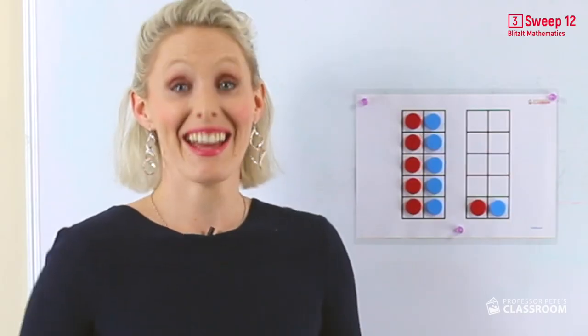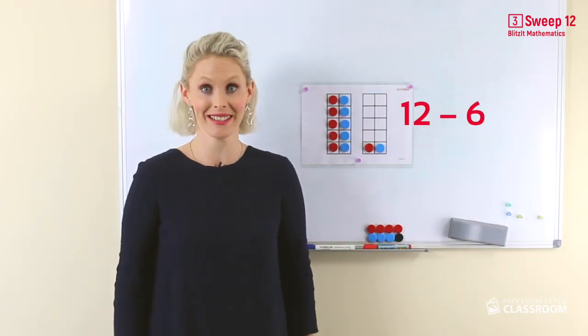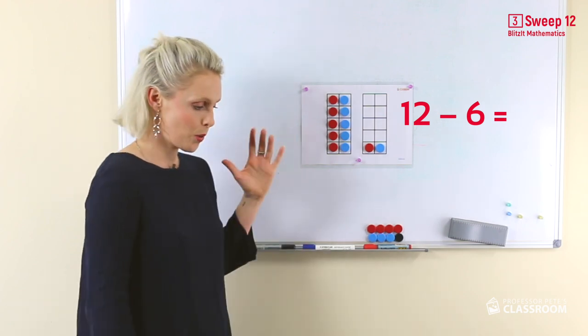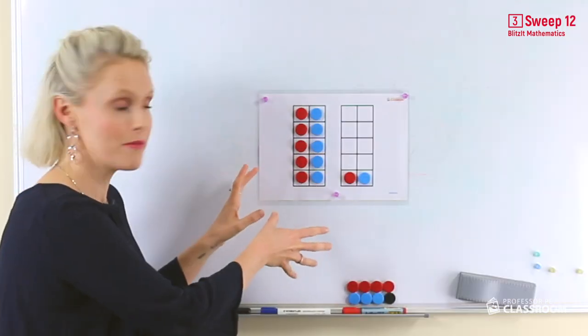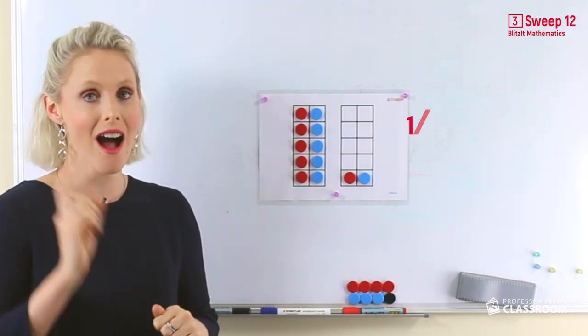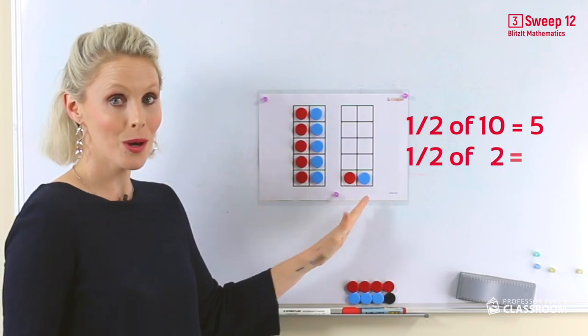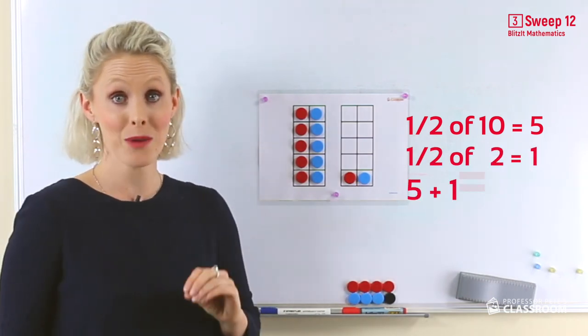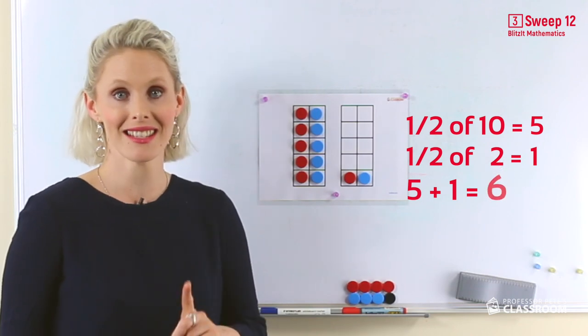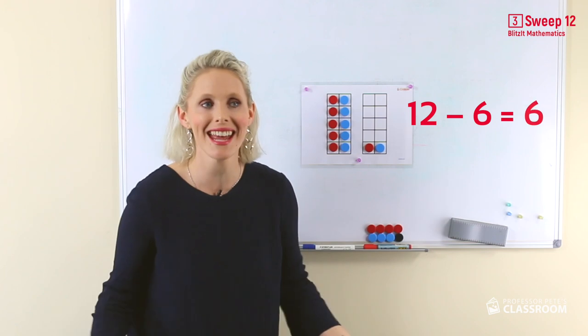You've got this. Now here we have 12 take away 6. On our tens frame we have 10. We know that half of 10 is 5. Half of 2 is 1. 5 add 1 is 6. So 12 take away 6 equals 6.